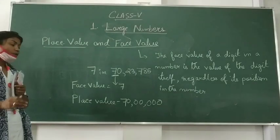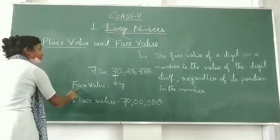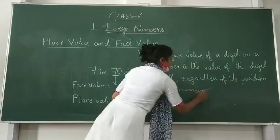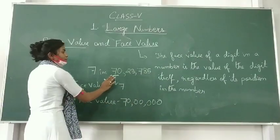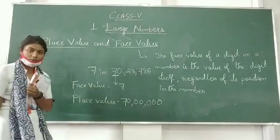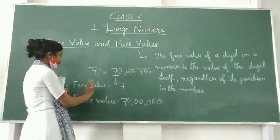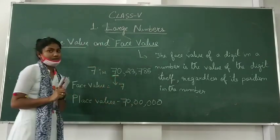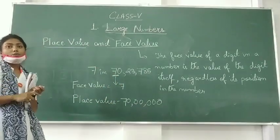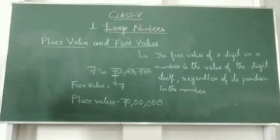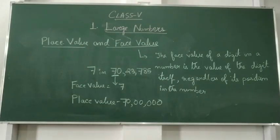You can see here the difference between face value and place value. Face value is the same number — it does not matter where its position is or in which place it lies. We are talking here about only the first seven, not the one which is in hundreds place. So, face value is the same number, and for place value, you have to write the place in which the digit is located. Here we are talking only about the first seven.